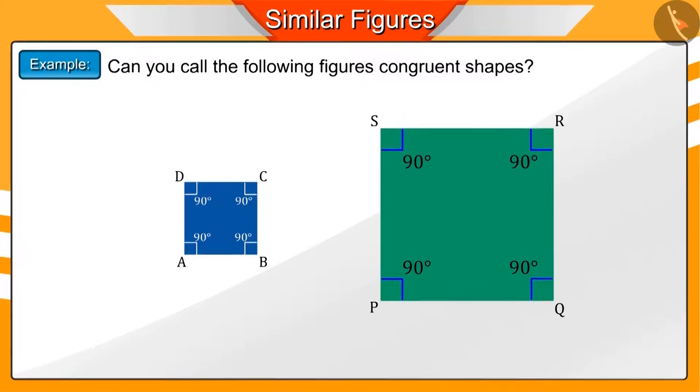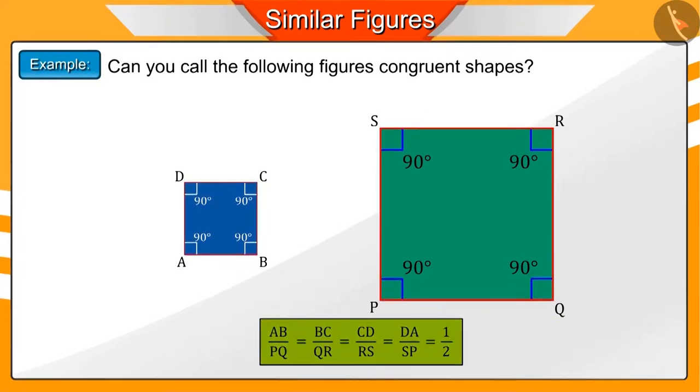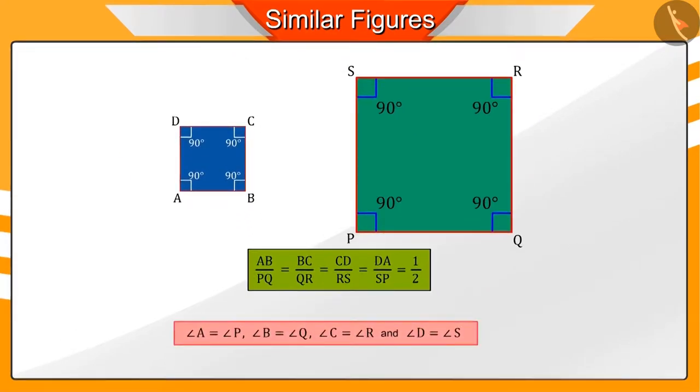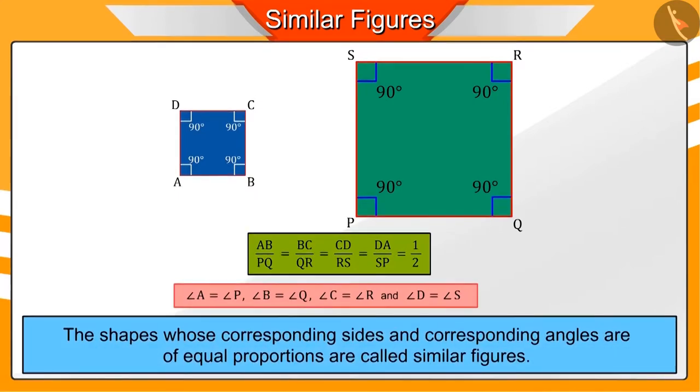Since the corresponding sides of these two figures are equal in proportion and their corresponding angles are also equal, we call them similar figures. The shapes whose corresponding sides and corresponding angles are of equal proportions are called similar figures.